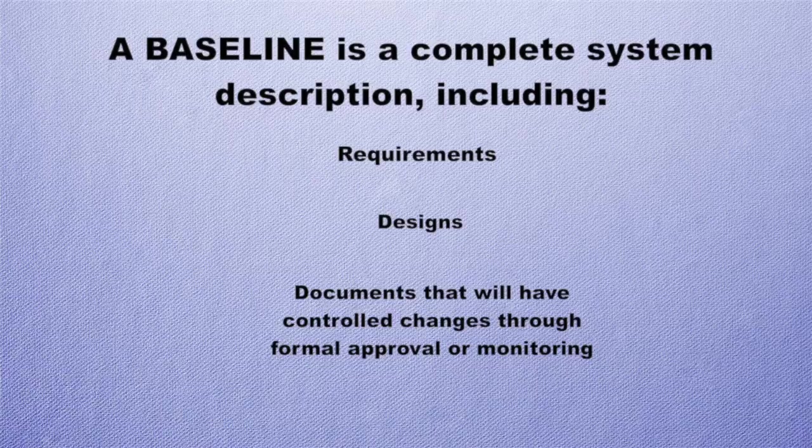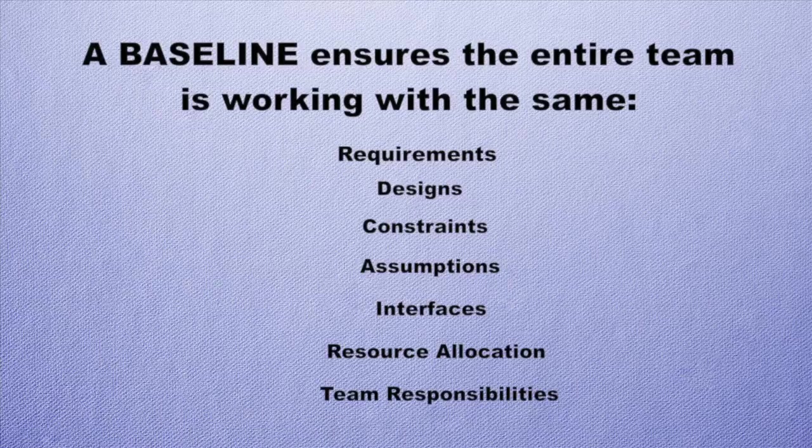A baseline is a complete system description. It starts at an early phase where you define the requirements for the system. As you go through the life cycle, you move from defining requirements to doing design, and then develop further documents — all of which are controlled so that any changes must go through a formal process. That's what it means to have baselined a product: it's under a control system where anyone wanting to change it must get approval. This ensures the entire team — including geographically diverse teams working in their own discipline areas — is working with the same requirements, designs, constraints, and assumptions.